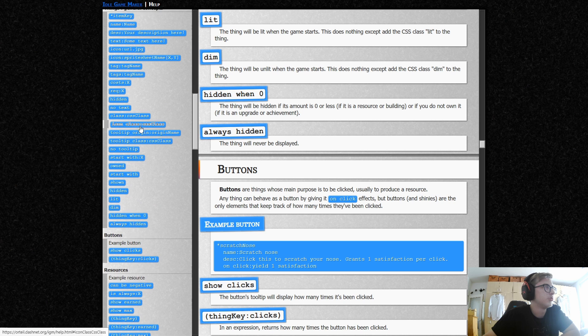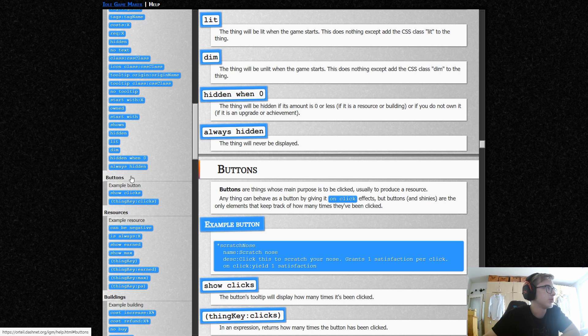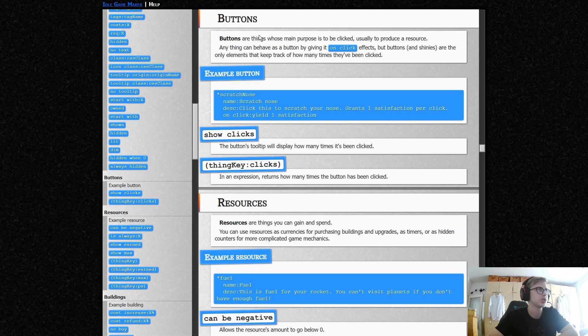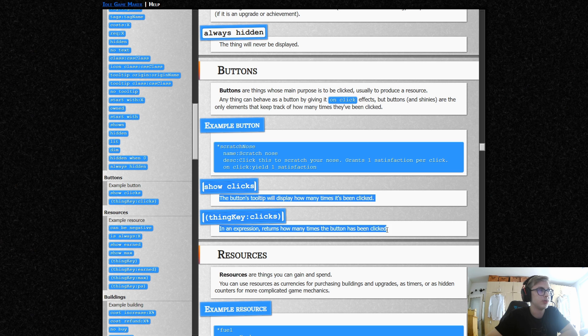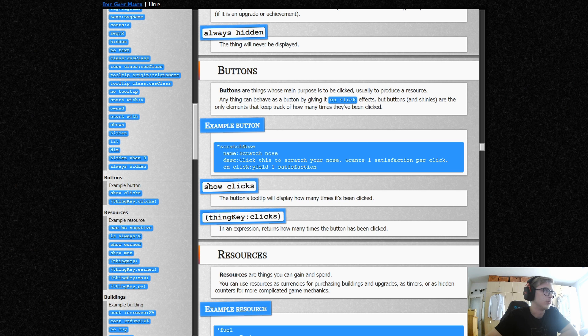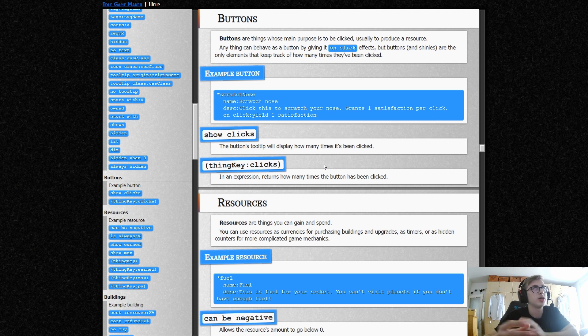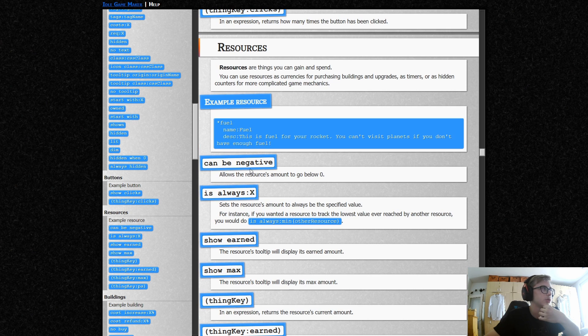But now let's move on to unique properties. For example, here we have the button section of the handbook and here we have the unique properties of buttons. We can do show clicks and keep in mind that these properties in brackets can actually be used as sort of expressions in other sections of your code as well.